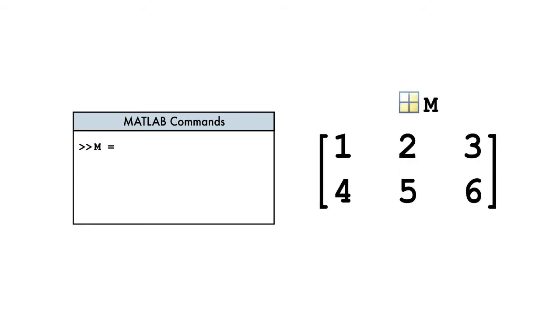Let's try creating a small matrix, M. We begin a matrix definition with a left square bracket. Just like a row vector, we separate elements in the first row of a matrix with commas.